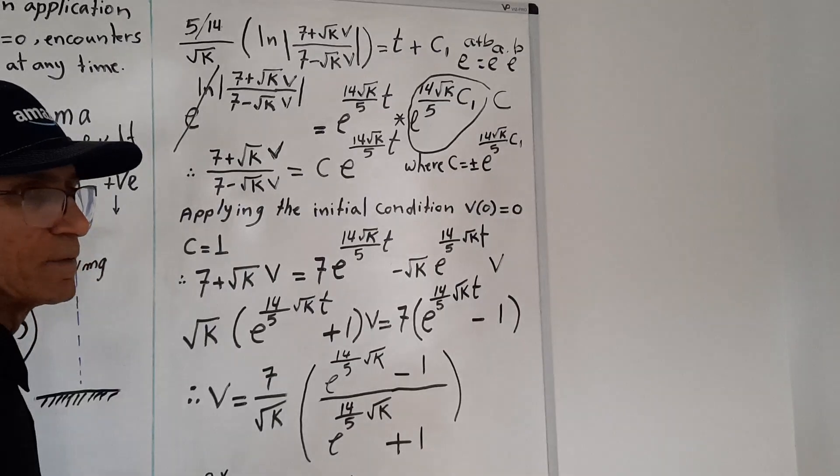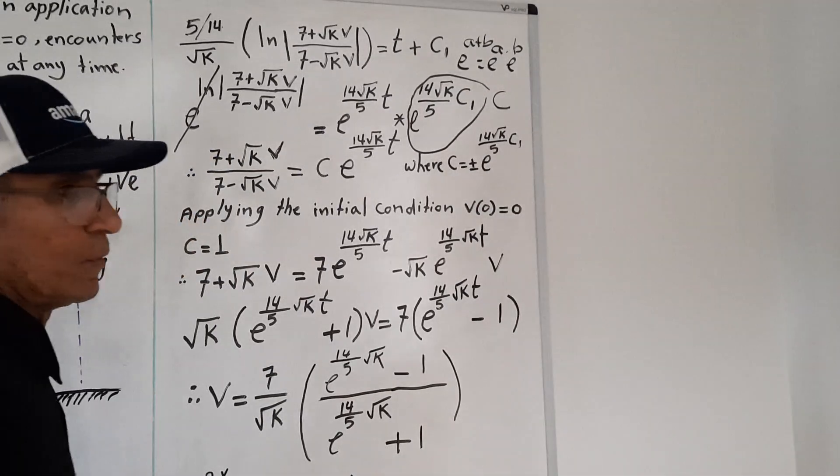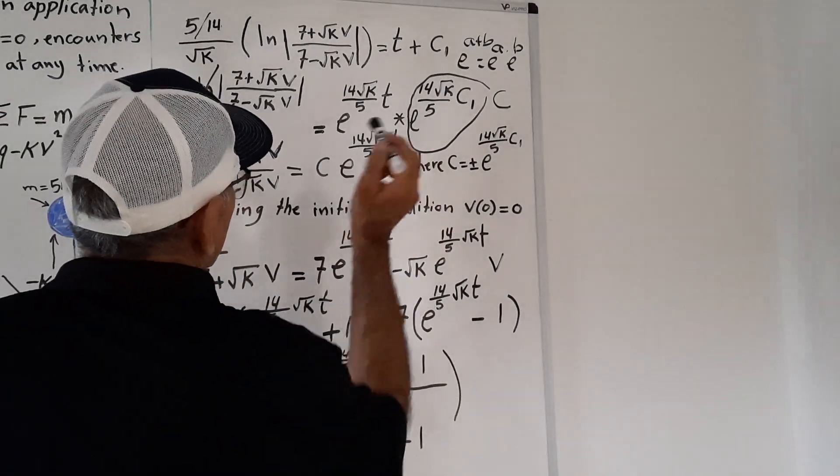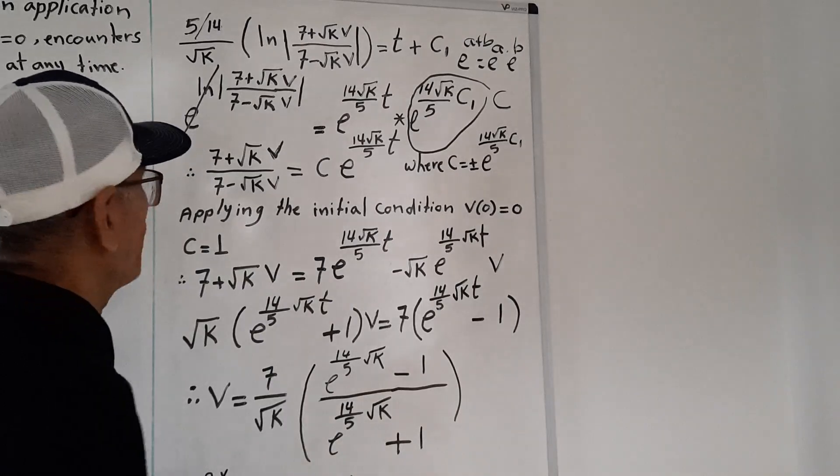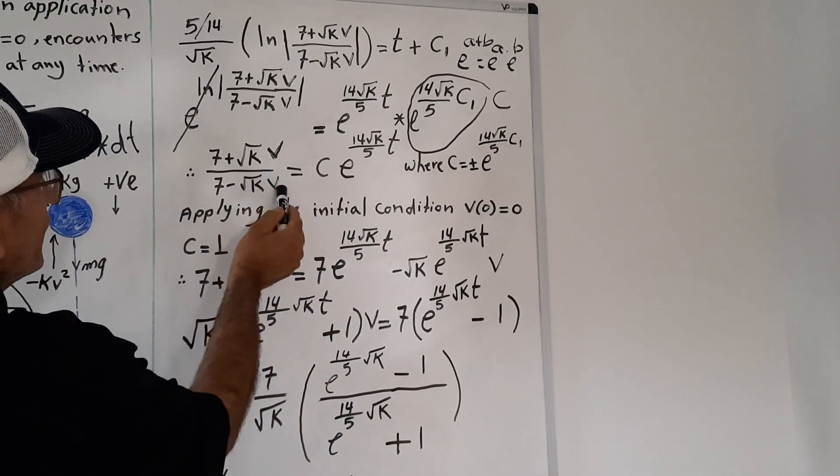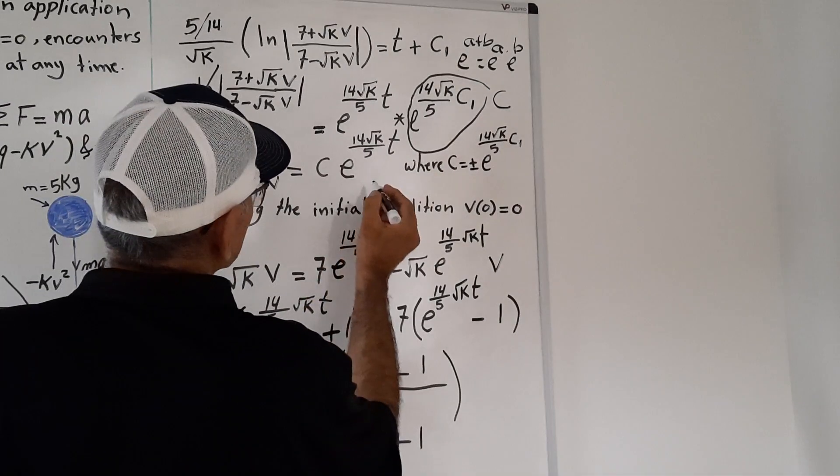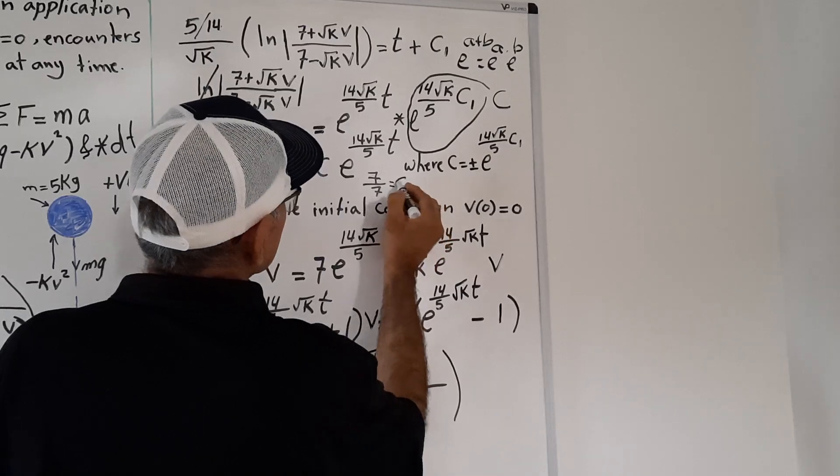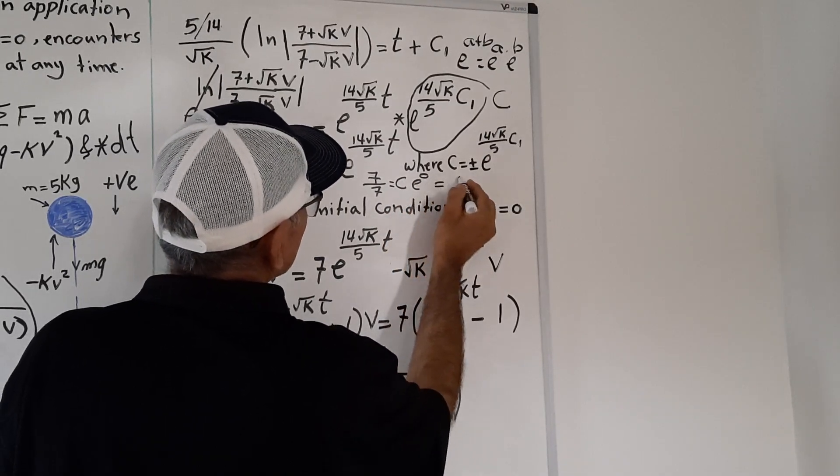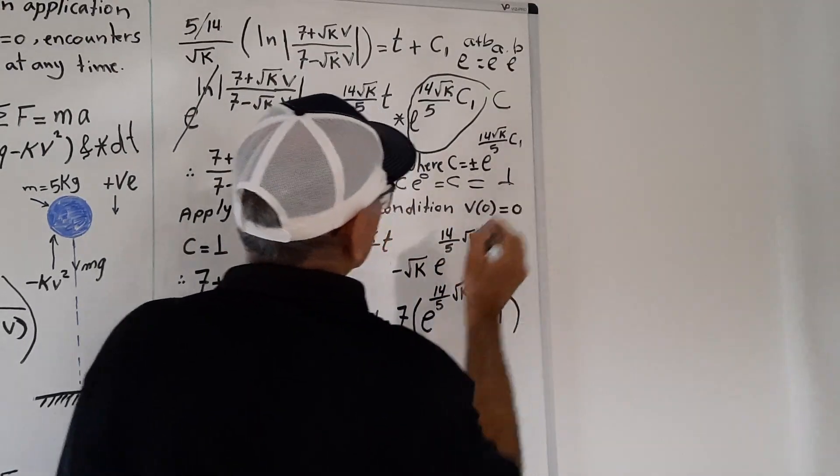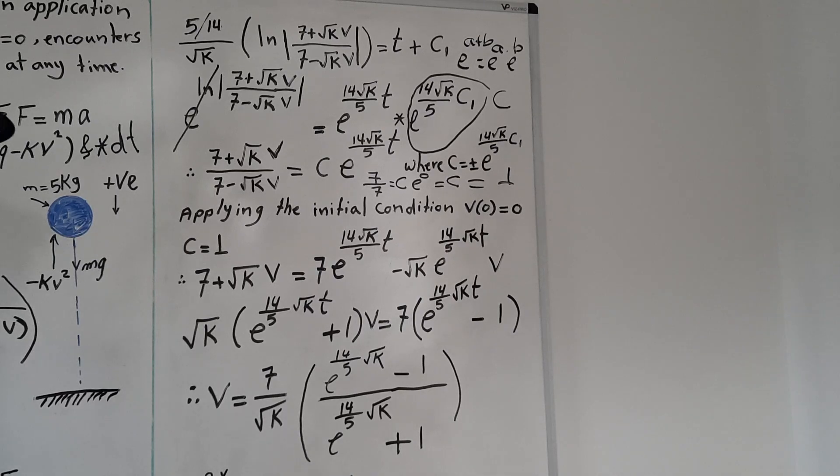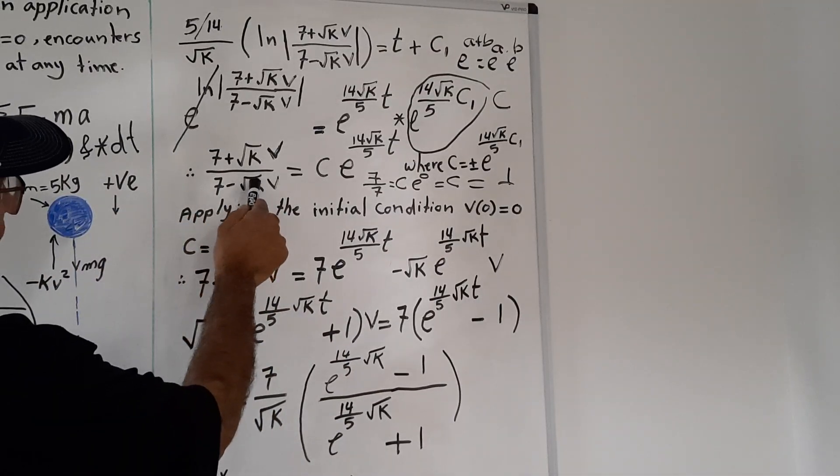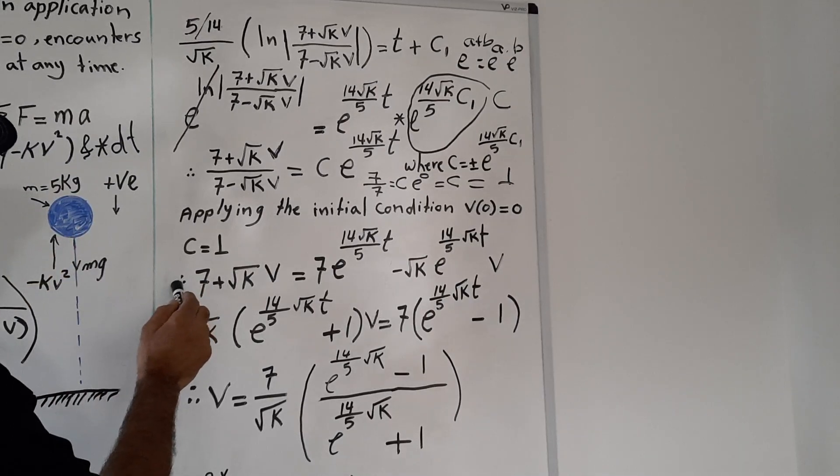Now we need to find C, so we go back to our initial condition which says at t equals zero, v equals zero. So if we plug t equals zero here, all this e to the power zero will be 1. We will have 7 plus zero over 7 minus zero equals C times e to the power zero, which equals C. So C equals 1.